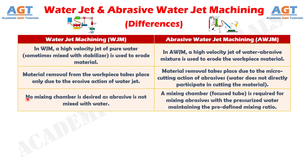Number 3: In water jet machining, no mixing chamber is required as abrasive is not mixed with water. Whereas, in abrasive water jet machining, a mixing chamber, also called a focused tube, is required for mixing abrasives with the pressurized water, maintaining the predefined mixing ratio.